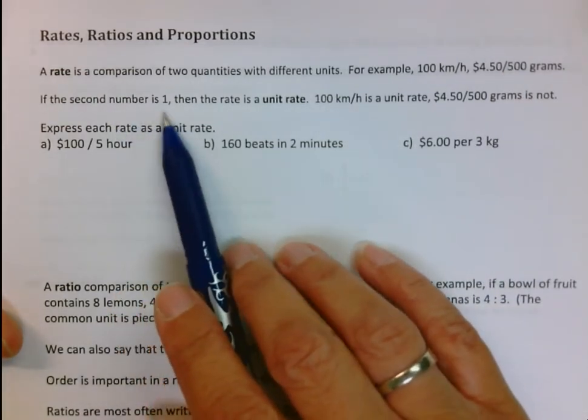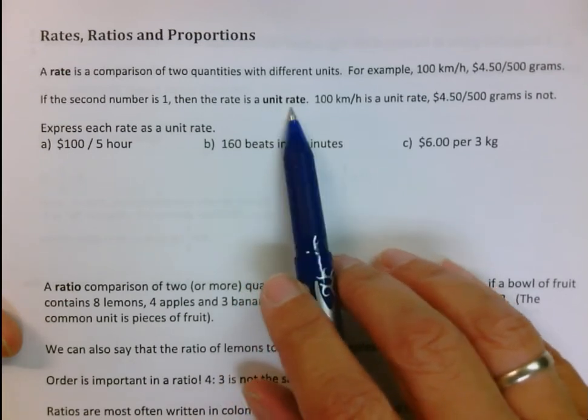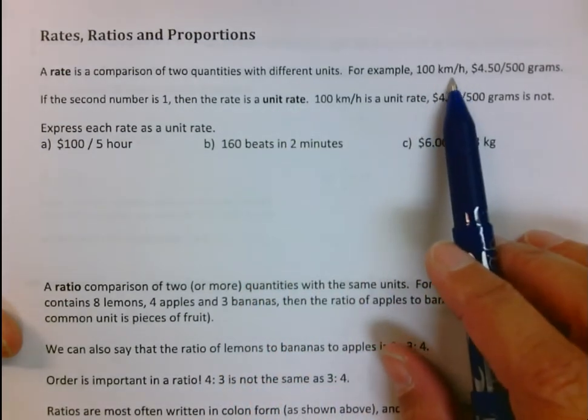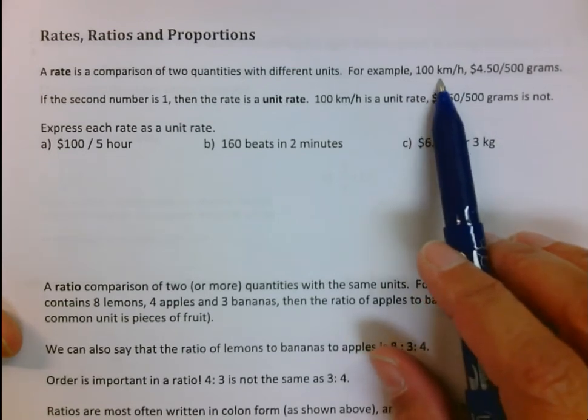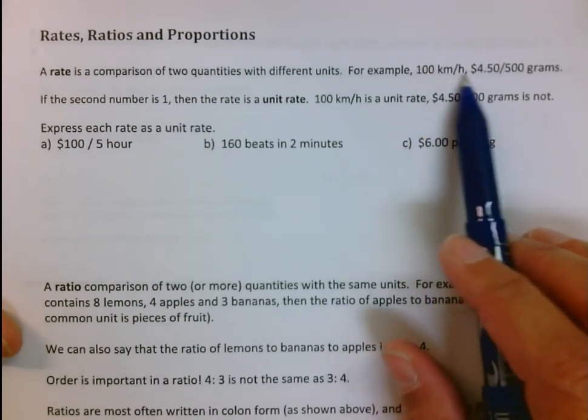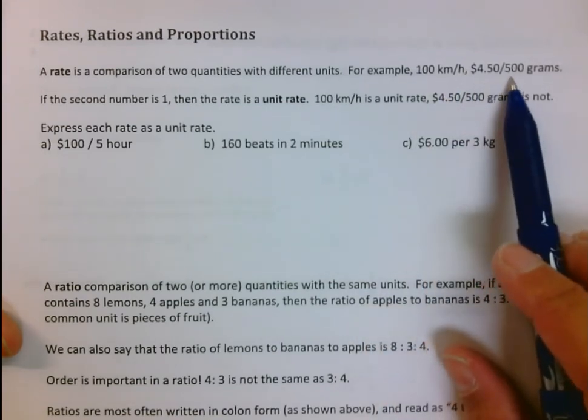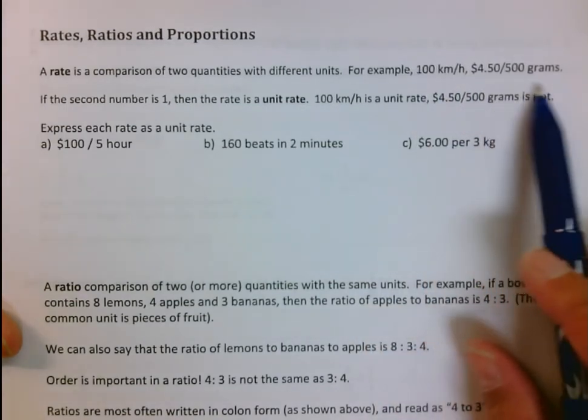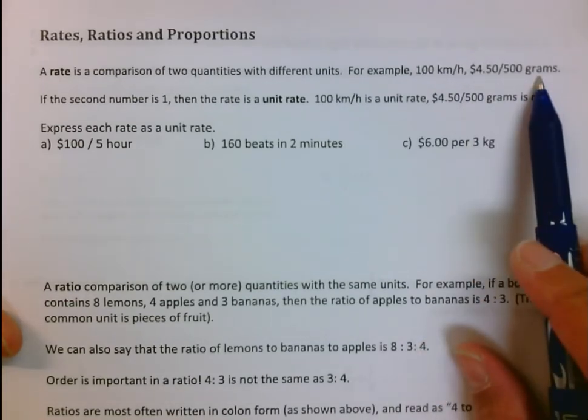If the second number is one, then the rate is called a unit rate. 100 kilometers per hour is 100 kilometers for every one hour, so this is called a unit rate. But $4.50 for 500 grams, not for one gram, so this is not a unit rate.